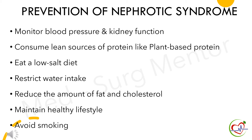Preventive measures of nephrotic syndrome include: monitor blood pressure and kidney function, consume lean sources of protein like plant-based protein, eat a low-salt diet, restrict water intake, reduce the amount of fat and cholesterol in the diet, maintain a healthy lifestyle, and avoid smoking.